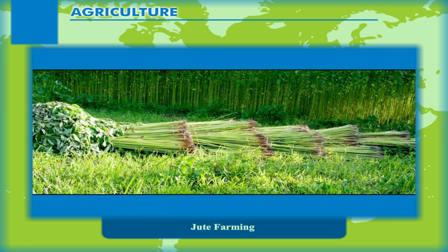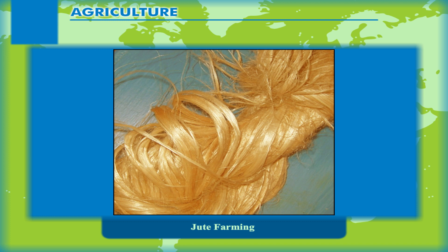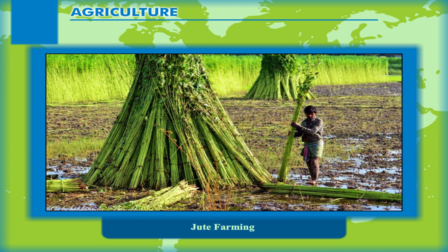Jute Farming: Jute is obtained from the bark of the jute plant stem. Jute is a native plant of the Ganga-Brahmaputra Delta. Wherever bulky, strong fabrics and twines resistant to stretching are required, jute is widely preferred. Its production cost is also low. It grows well in drained sandy loam and requires a warm and humid climate. Jute plants require temperature of more than 25 degrees Celsius and rainfall of over 125 cm per year.